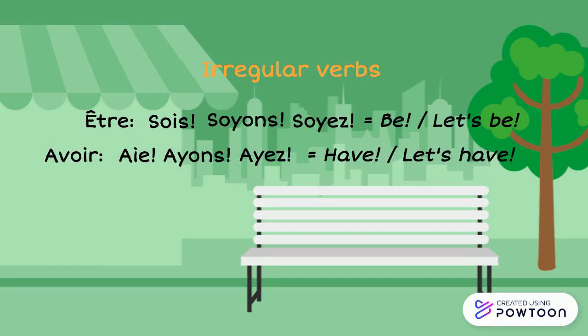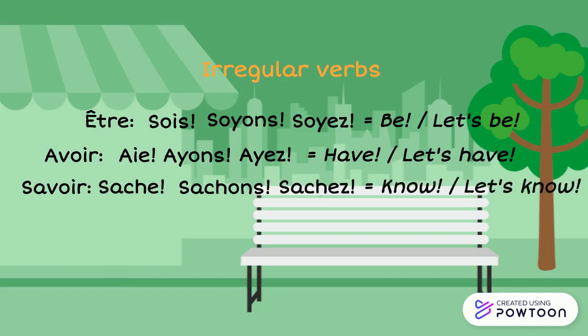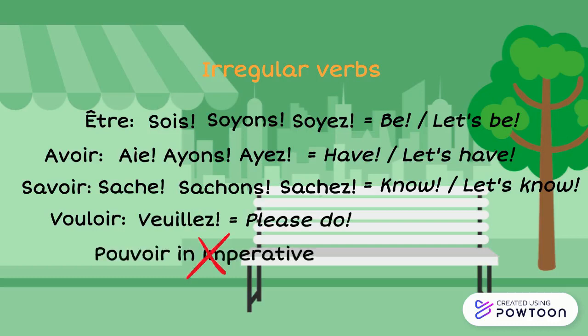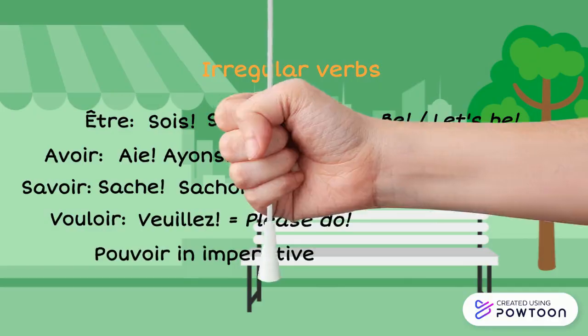And more surprisingly: 'Savoir' — 'Sache', 'Sachons', 'Sachez' — know, let's know. And 'vouloir' mostly exists at the second person plural — 'Veuillez' — with the sense of 'please do'. Please note that 'pouvoir' does not exist in the imperative form.